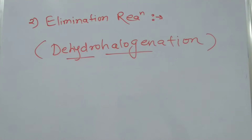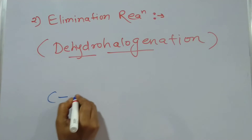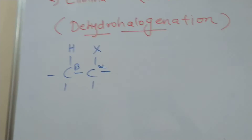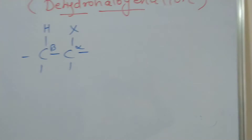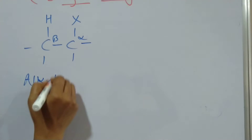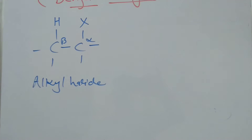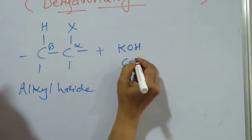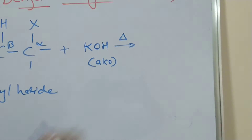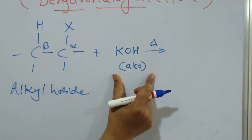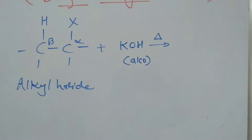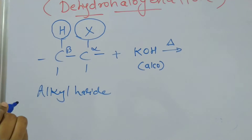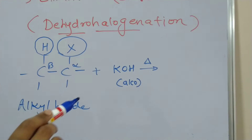Let us see the general reaction first. Here is the general reaction. This is the alpha hydrogen and this is the beta hydrogen. When an alkyl halide reacts with alcoholic potassium hydroxide (KOH) and is heated, then due to elimination of hydrogen and halogen,